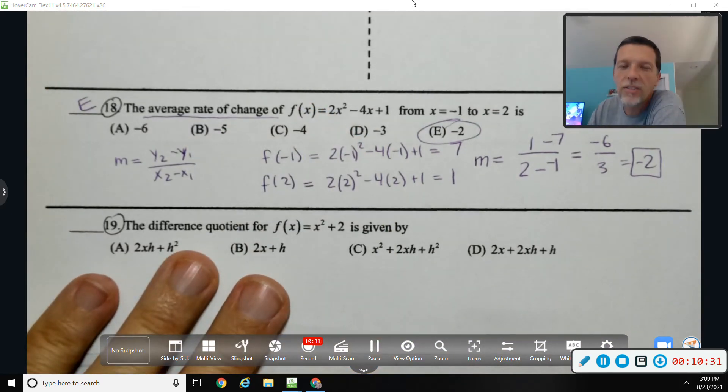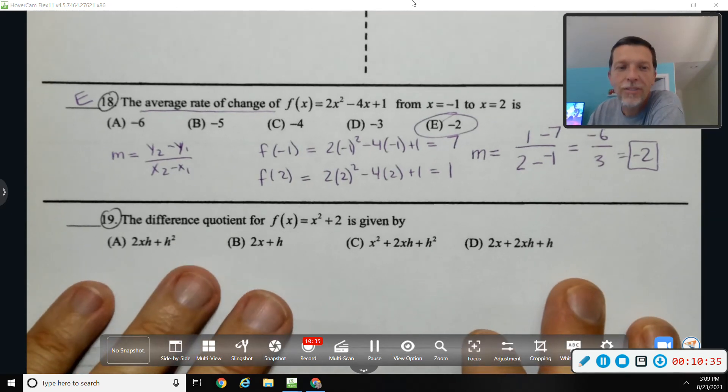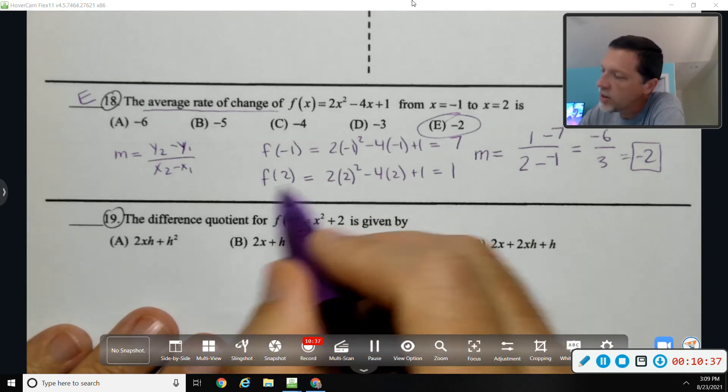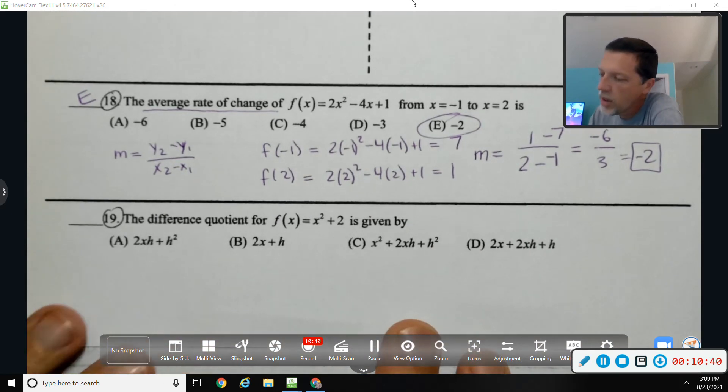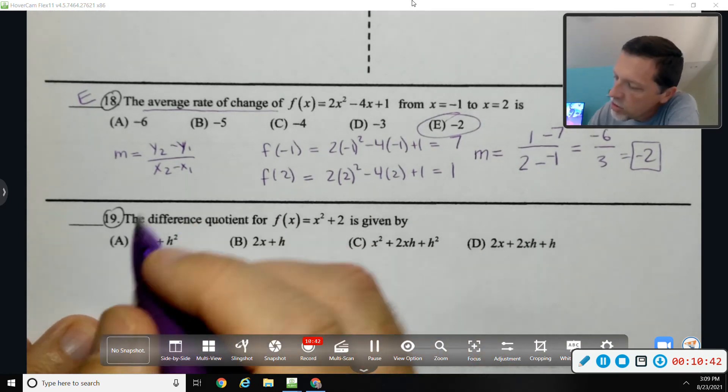Again, average rate of change is the same thing as slope, so you're not going to forget that, I don't think. It's just are you going to mess up any of the little steps along the way?